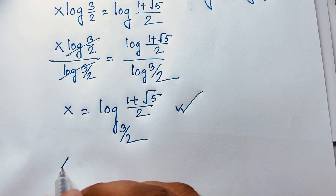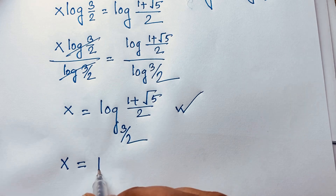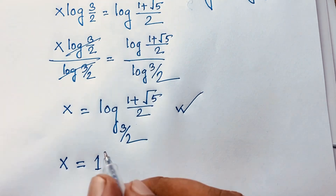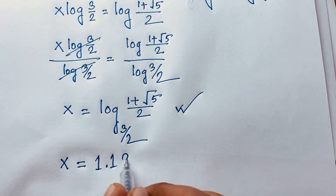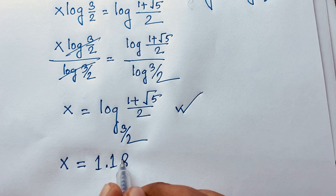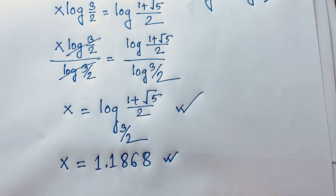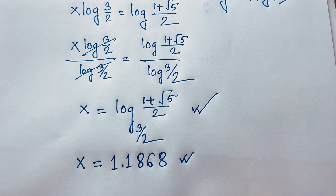Using a calculator, we find x is approximately equal to 1.1868. This is the value of x in this exponential Math Olympiad problem. Thank you all — if you enjoy this video, please subscribe to my channel for other interesting videos.